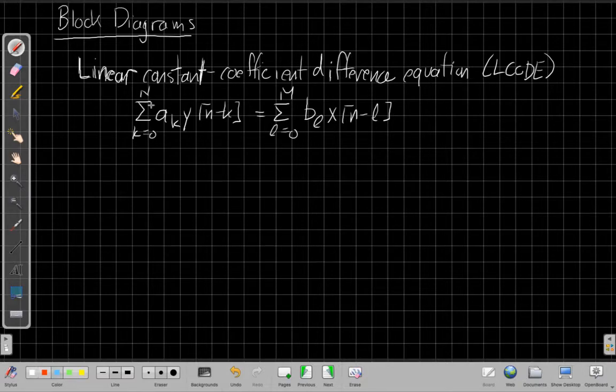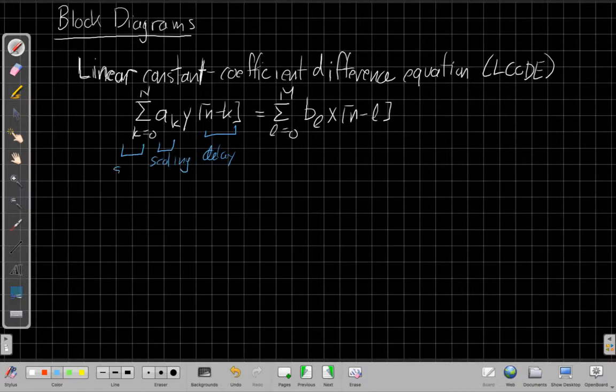And there's really three things going on if I break this down. I need to have a delay, I need to have a scaling, and I need to have a sum. And that's true on both sides of the equation. So I really need these three kinds of blocks or some way to represent those three operations to make this work.